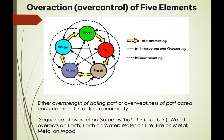Over-action, or over-control, of the five elements can result from either over-strength of the acting part or over-weakness of the part being acted upon. This results in an abnormal sequence of over-action: wood over-acts on earth, earth on water, water on fire, fire on metal, and metal on wood — that is the overacting or over-controlling cycle.